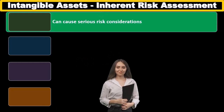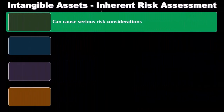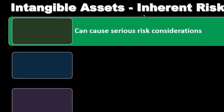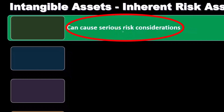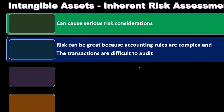Now we'll discuss inherent risks related to intangible assets. As the auditor, our goal is to think about inherent risk, control risk, and then set detection risk to determine how much substantive testing we need to do. Inherent risk refers to the riskiness of items without considering controls. When we think about intangible assets, they can cause serious risk considerations because the fact that they're intangible yet reported as assets on the balance sheet makes it difficult to verify, test, and prove their value.